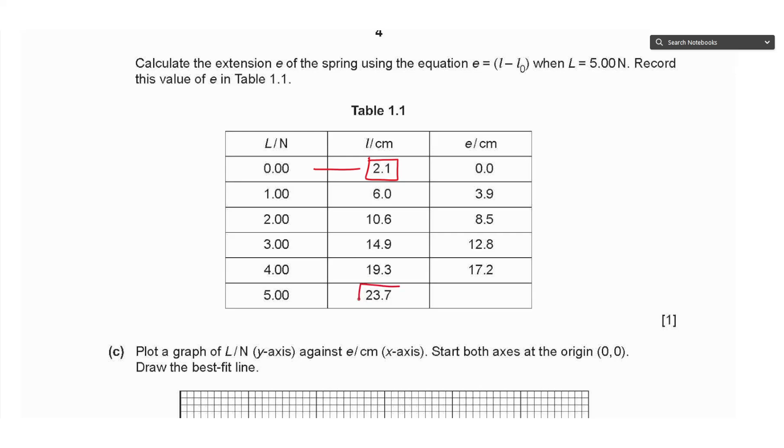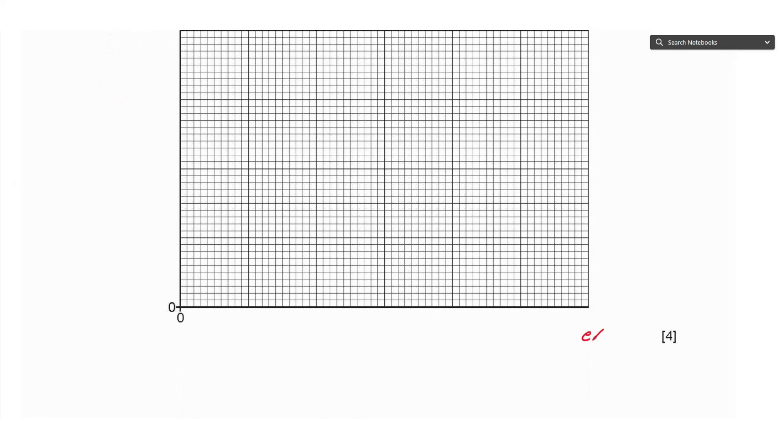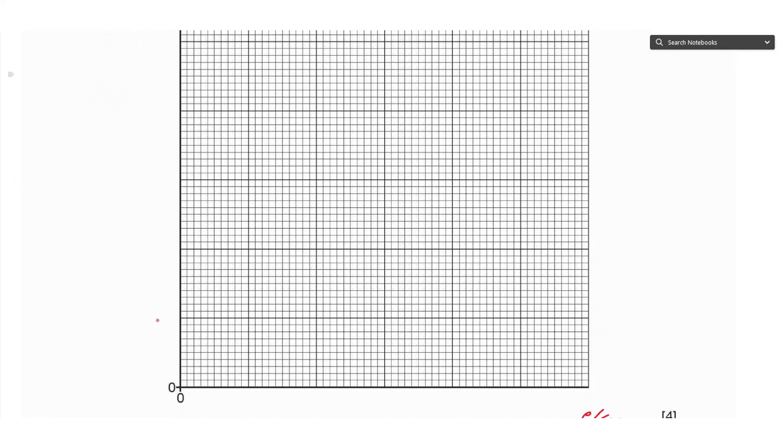We subtract 23.7 minus 2.1 which gives an answer of 21.6 centimeters. Part C says plot a graph of L per Newton on the y-axis against e per centimeter on the x-axis. Start both axes at the origin (0,0). Draw the best fit line. First we label the axes: load per Newton and e per centimeter.